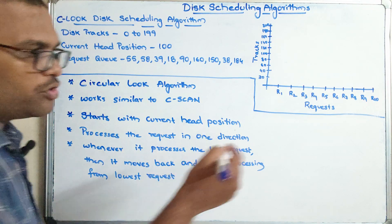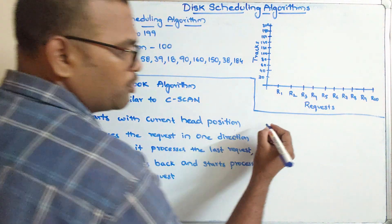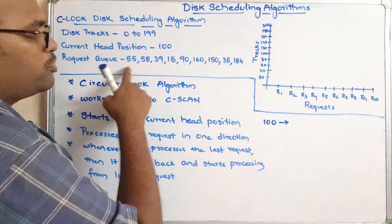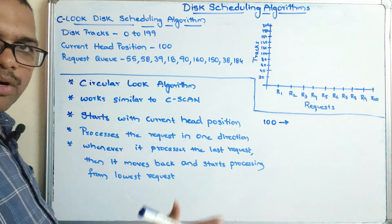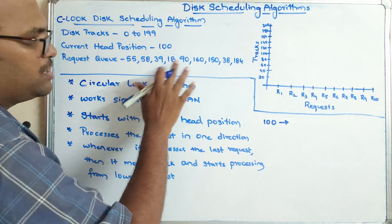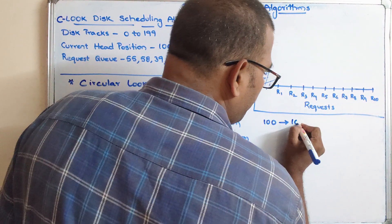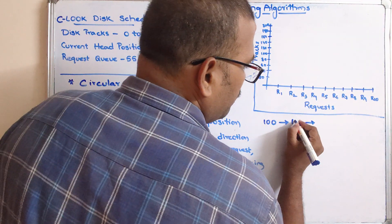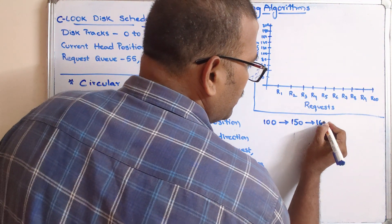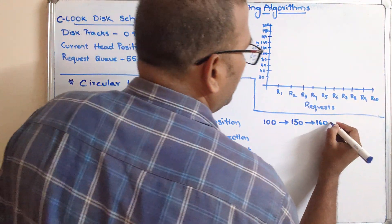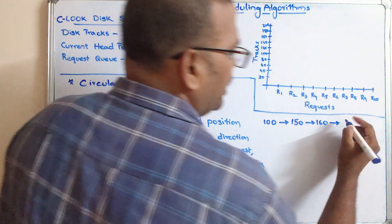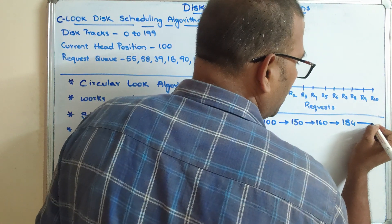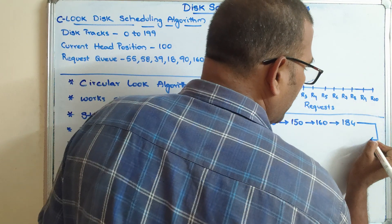Let me explain with an example. The current head position is 100. From 100 it moves in the forward direction to 150, then from 150 it moves to 160, and then from 160 it moves to 184.